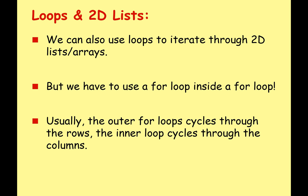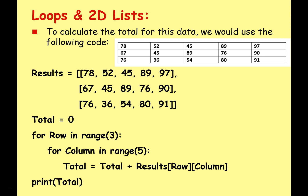You can also use loops to iterate through two-dimensional lists, which is more complicated because we use a for loop inside a for loop - a nested set of loops. Usually the outer loop cycles through the rows and the inner loop cycles through the columns, though you can swap that around. Let's look at an example: we have a table of numbers which we convert into a two-dimensional list, with three lists inside our main list - each row becomes one list inside the greater list.